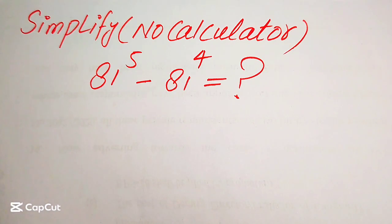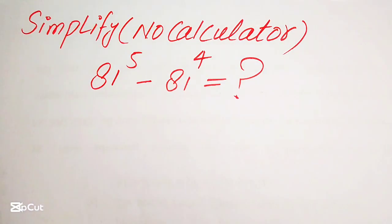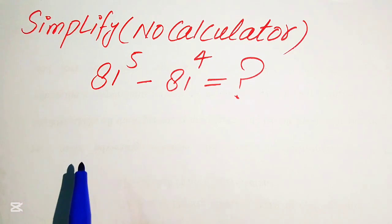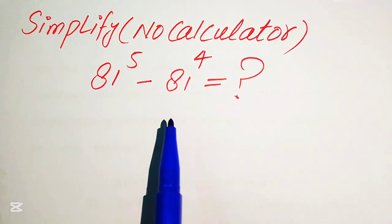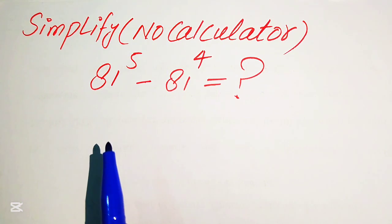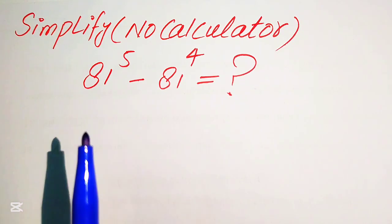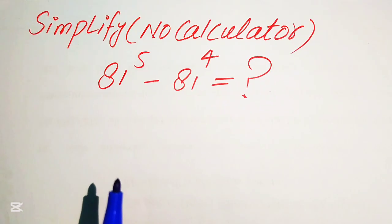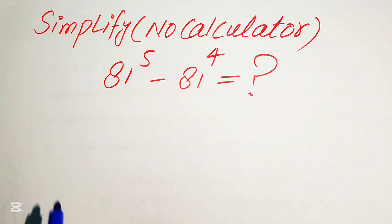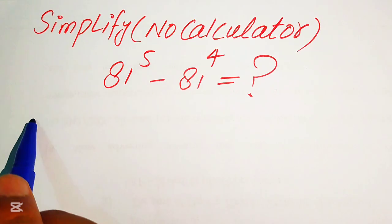How to simplify this nice algebraic expression? Calculator is not allowed in this problem. We have 81 to the power of 5 minus 81 to the power of 4, and we will write this into simplified form without using the calculator. It means that we will show all of the working on this paper.